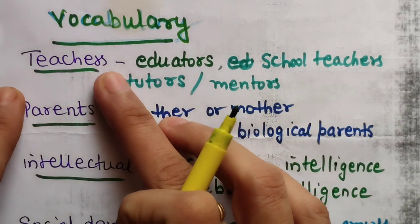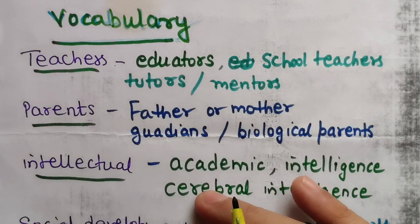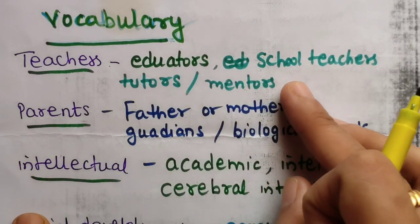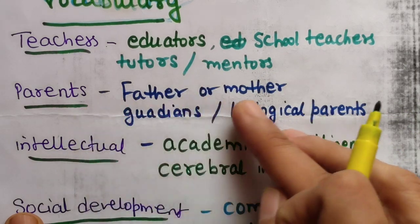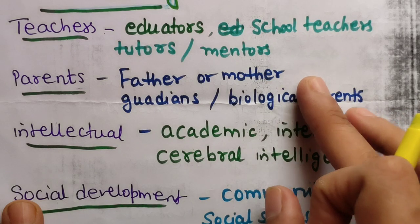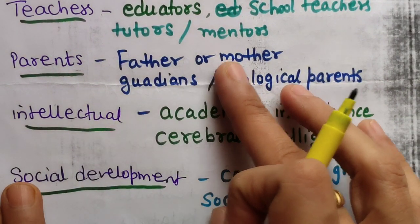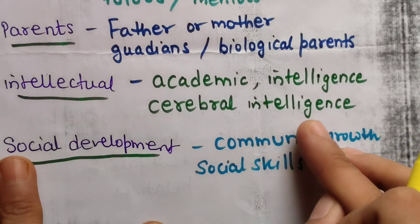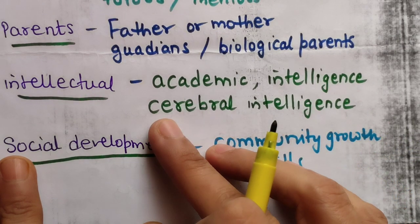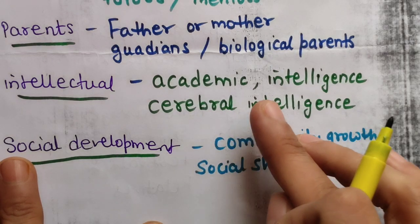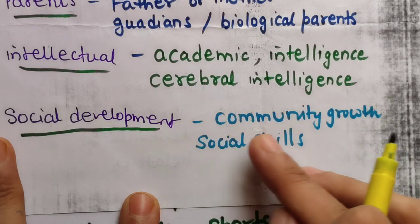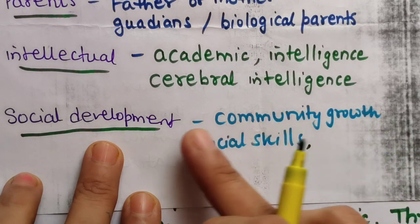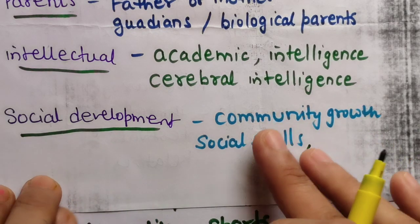Now coming to vocabulary — there are four key words in the statement: teachers, parents, intellectual, and social development. For 'teachers' we can use: educators, school teachers, tutors, mentors, well-trained teachers. For 'parents': father or mother, guardians, biological parents. For 'intellectual': academic, intelligence, cerebral intelligence. For 'social development': social skills, social growth, community growth.